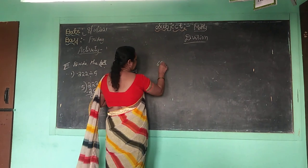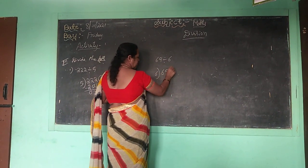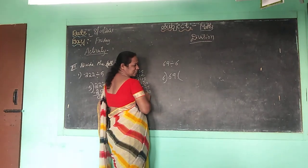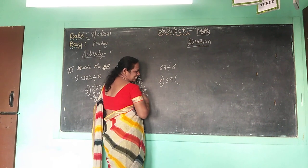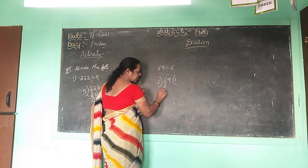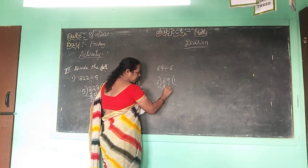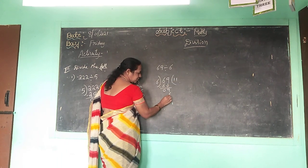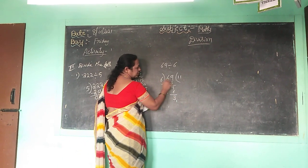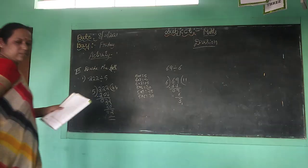69 divided by 6. 6 ones are 6, 6 minus 6 is 0. Take 9 down. 6 ones are 6, 9 minus 6 is 3. 6 elevens are 66, and 3 will be the remainder.